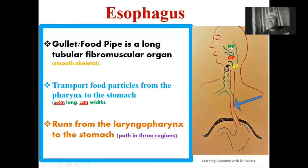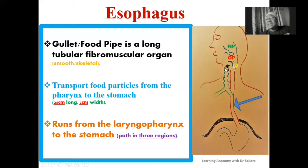For the nasopharynx, we have the nasal cavity located anterior to it. For the oropharynx, we have the oral cavity anterior to it. For the laryngopharynx, we have the larynx located anterior to it. The specific region of the pharynx connected to the stomach through the oesophagus is the laryngopharynx, because this is the most inferior part of the pharynx, also referred to as the hypopharynx.